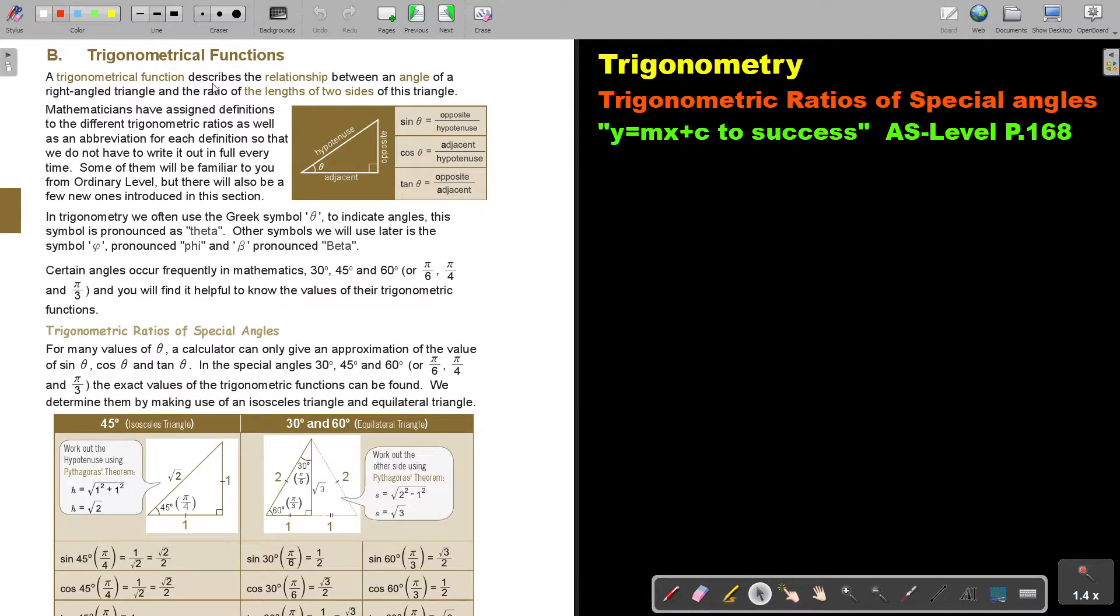A trigonometrical function describes the relationship between an angle of a right angle triangle and the ratio of the length of the two sides of that triangle. Mathematicians have assigned definitions to the different trigonometric ratios. This is the abbreviation: opposite over hypotenuse, cos adjacent over hypotenuse, and tan opposite over adjacent. I always refer to it as SOHCAHTOA.